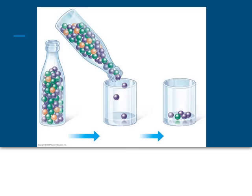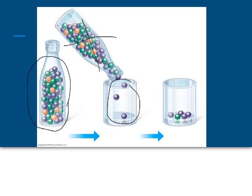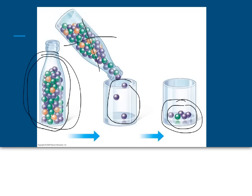Here's an example: imagine a population of some organism represented by different colored beads. Some terrible event — maybe a hurricane or fire — kills most of them. The ones that survive, just by chance, are mostly purple. So the remaining population looks nothing like the original, because the small number of survivors does not represent the original genetic diversity that existed.